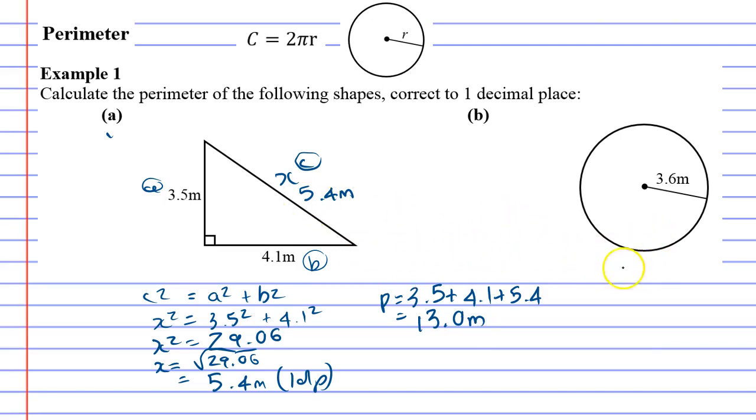Now the circle. So whenever you do curved shapes you just have to use a formula. In this case, the formula for a circle is c equals 2πr, which is the same as writing 2 times π times r.